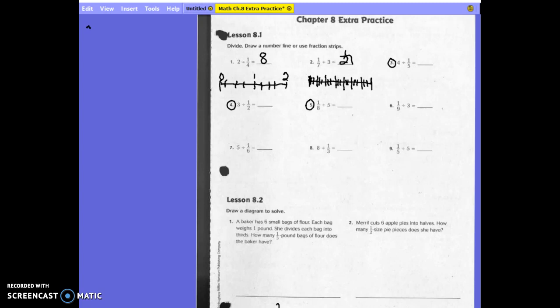Let's look at 8.2. It says draw a diagram to solve. So the baker has 6 small bags of flour. Each bag weighs 1 pound. She divides each bag into 1 third. So she has 6 small bags. How much is she dividing them into? 1 third.